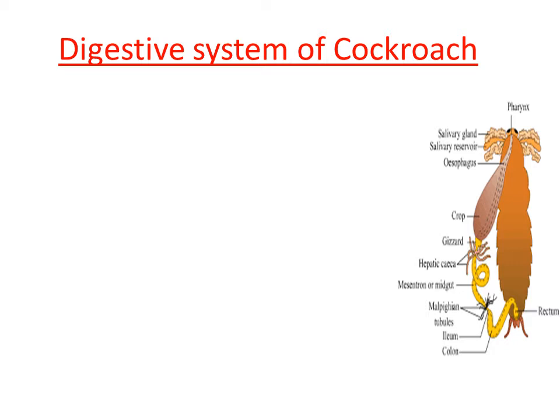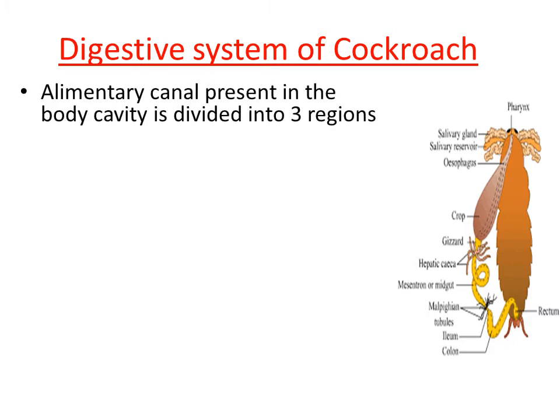In examinations, you may be asked to explain the alimentary canal or gut of cockroach — these terms refer to the digestive system. The alimentary canal is located within the body cavity and is divided into three regions: the first region is called foregut, the second is called midgut, and the third is called hindgut.